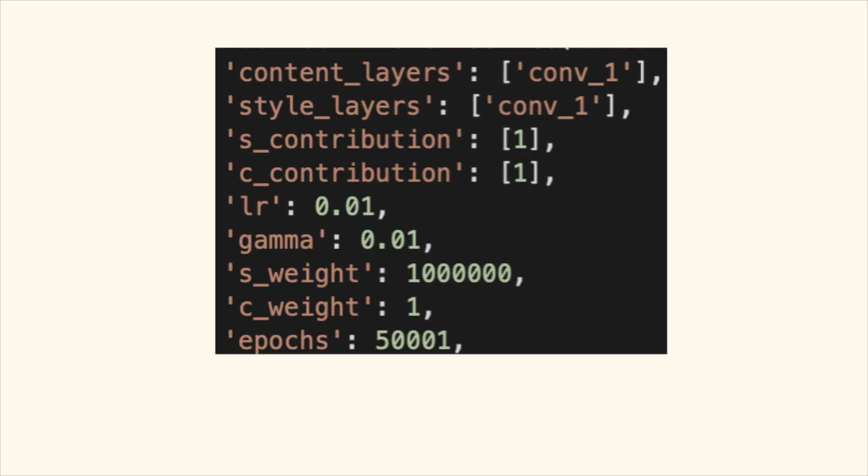Now we'll be talking about our hyperparameters. So there are a few hyperparameters that we used. Firstly, the content and style layers just represent which particular layers that we've chosen to calculate our content and style losses. From there, we also have content and style contribution, which is for those particular layers, each layer will have a loss that is summed up to calculate the total style or content loss. So how much we want to weight that particular layer is what we get from content and style contribution. Learning rate we discussed in class, which is used in our optimizer. Gamma, lambda, or weight decay, whatever you want to call it, that's the regularization hyperparameter that we've discussed in class. Style weight and content weight are how much we weight the total style loss or total content loss in our total loss calculation. So it's like a weighted sum and then epochs are how many epochs we ran.